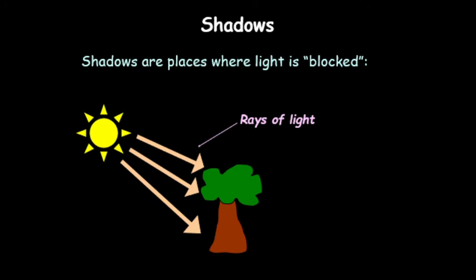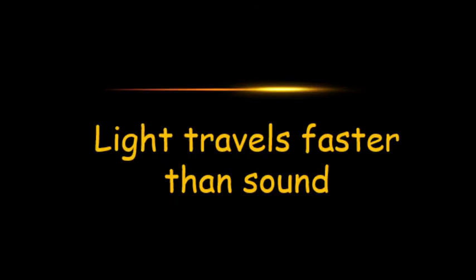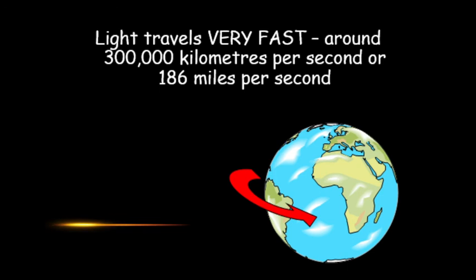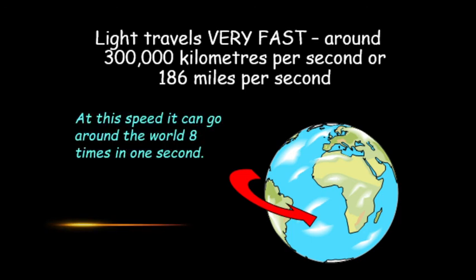Shadows are places where light is blocked. Light travels in straight lines and travels faster than sound — around 300,000 kilometers per second or 186 miles per second. At this speed, it can go around the world eight times in one second. That is why we first see lightning before hearing the sound of thunder, and the light of a gun also comes before its sound.